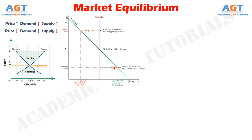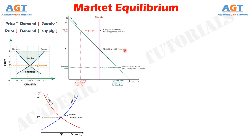The balancing effect of supply and demand results in a state of equilibrium. When the supply and demand curves intersect, the market is in equilibrium. This is where the quantity demanded and quantity supplied are equal. The corresponding price is the equilibrium price, or market clearing price, and the quantity is the equilibrium quantity.